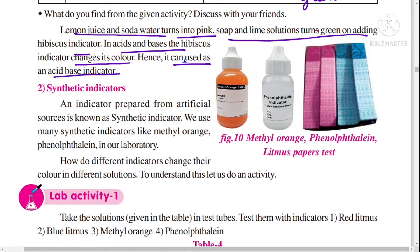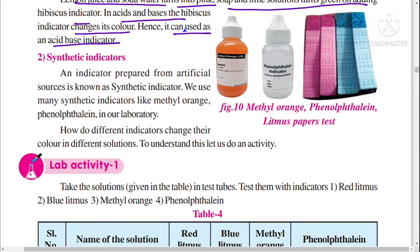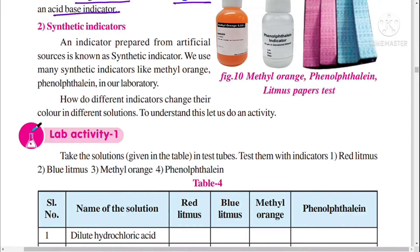Synthetic indicators means an indicator prepared from an artificial source is known as a synthetic indicator. We use many synthetic indicators like methyl orange. This one is methyl orange, this one is phenolphthalein indicator, and litmus — used for testing purposes in the laboratory.